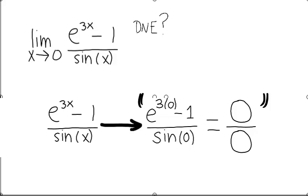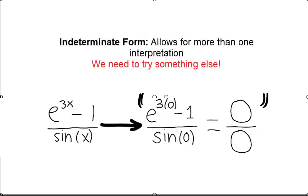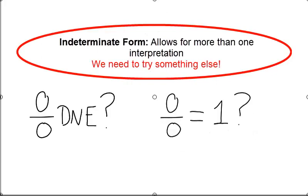However, we also know that any expression divided by itself is equal to 1. Because we have no good reason to pick one of these options over the other, we say that 0 over 0 is an indeterminate form. That is to say, the limit cannot be determined from the given information.